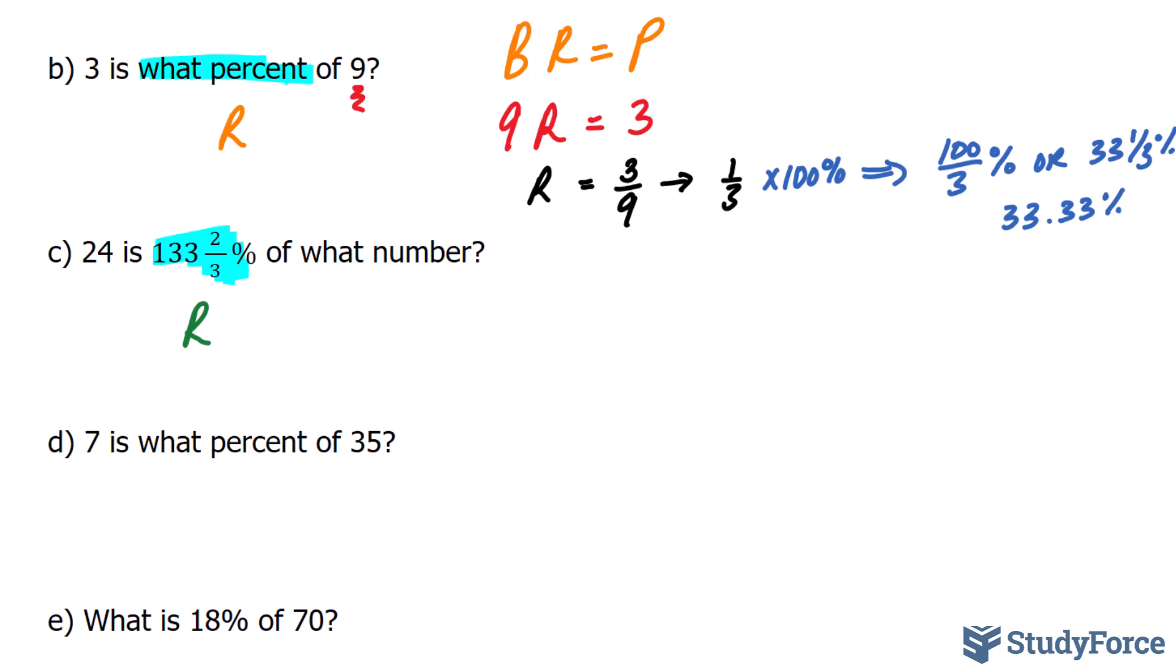Let's first distinguish what it is that they want us to find. Now again, this percentage is followed by the word of what number. Percentage is always associated with the base value. So the what number that's unknown is our base value, and this, through deductive reasoning, must be our portion.